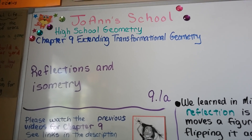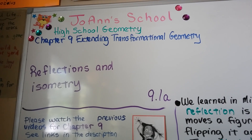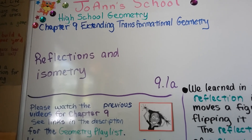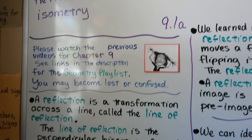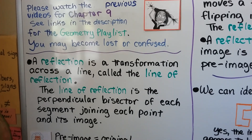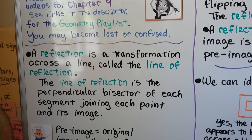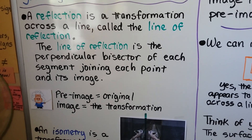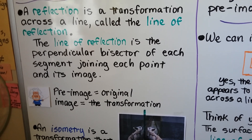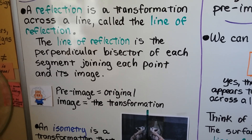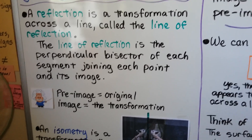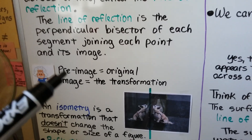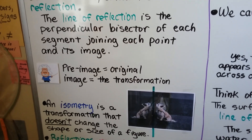We're in a new chapter, chapter 9, all about extending transformational geometry. This is Reflections and Isometry, section 9.1a. A reflection is a transformation across a line called the line of reflection, and the line of reflection is the perpendicular bisector of each segment joining each point and its image. The pre-image is the original and the image is the transformation.